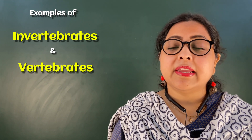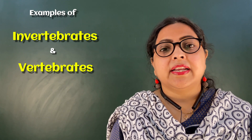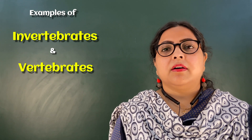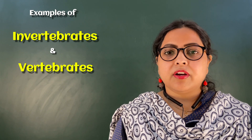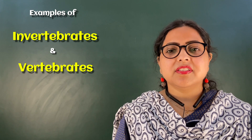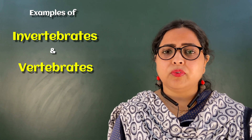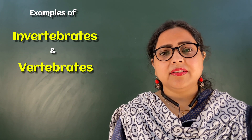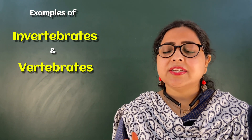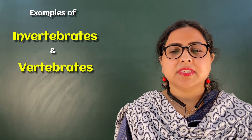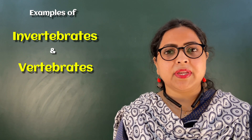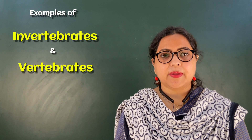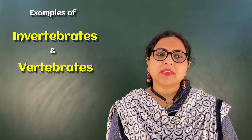The eight phyla of invertebrates are: Porifera, Coelenterata, Platyhelminthes, Nematoda, Arthropoda, Mollusca, Annelida, and Echinodermata. All members of these phyla are examples of invertebrates.